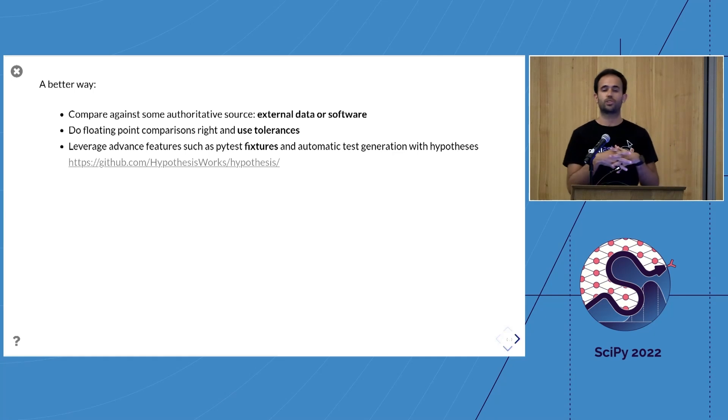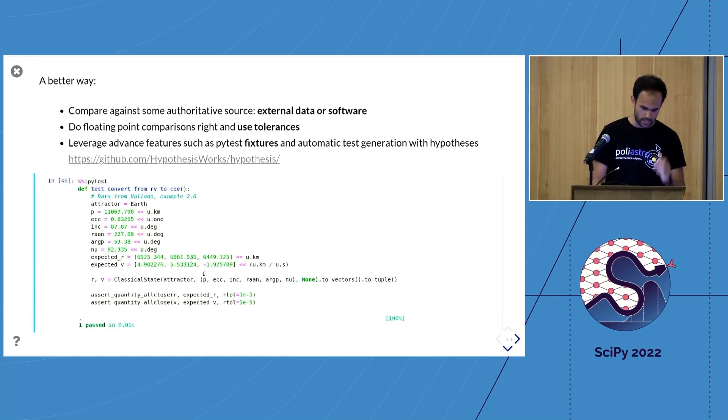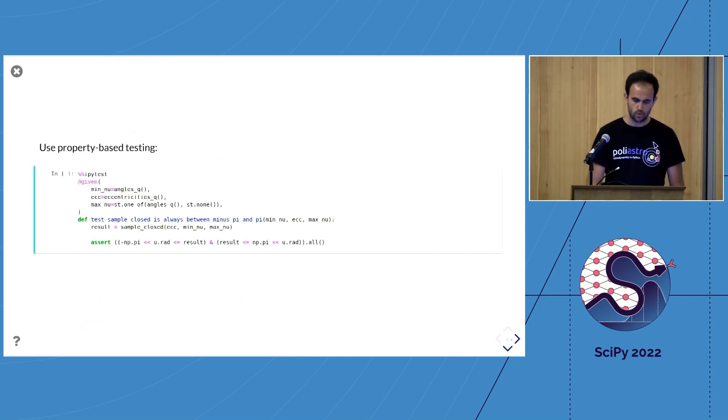There has to be a better way to do this. For example, what you can do is compare your results with some external results. This is what we do for some functions. We took a textbook in astrodynamics—Vallado—and we see this worked example. We verify that our result matches what the result from the book is, and in fact we get this test to pass.